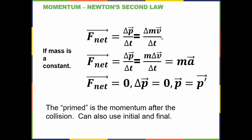The net force is equal to the change in momentum. If mass is constant, it's equal to the mass times the change in velocity over the change in time, which is the mass times the acceleration. If the net force is zero, that means the change in momentum is zero, and the initial momentum equals the final momentum. Sometimes we write the momentum before the collision as p and the momentum after the collision as p prime. Either notation works.